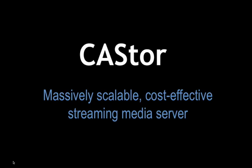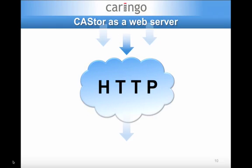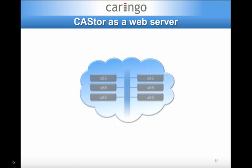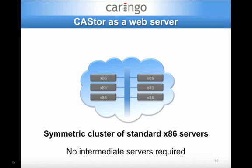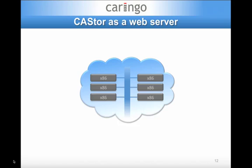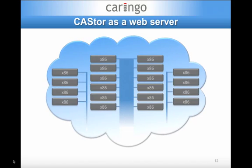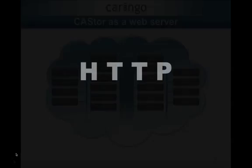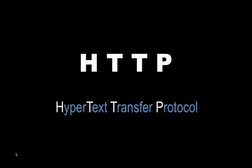Let's take a look at why Castor offers the most massively scalable, cost-effective streaming media server on the market today. Castor is a web server that stores content and uses standard HTTP as the access protocol. Castor runs on any standard x86-based server and creates a symmetric storage cluster where no intermediate and no special purpose servers are required. As such, it's ideally suited for storing and distributing large quantities of media. Castor can handle hundreds to tens of thousands of client connections simultaneously, just as you would expect from a web server, all within a pure native HTTP environment without added servers and complexity.